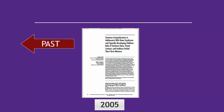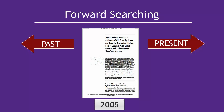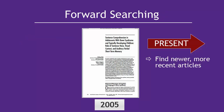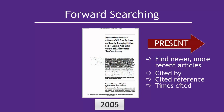What about more recent research? Forward searching allows you to find newer sources on your topic that build on your original article. When you forward search, you begin with an article, then look for links in the database that say Cited By, Cited Reference, or Times Cited. The results list shows books or articles that have included your original article in their bibliographies.